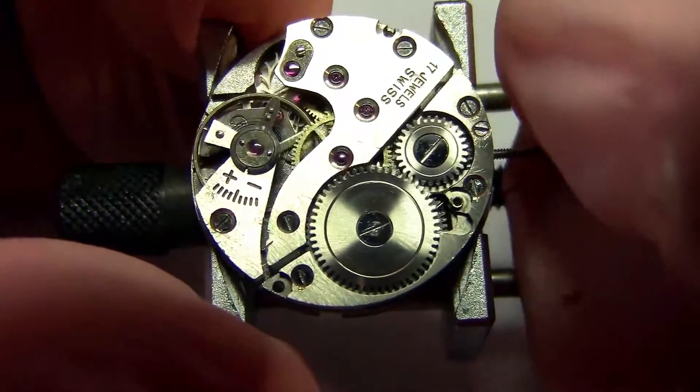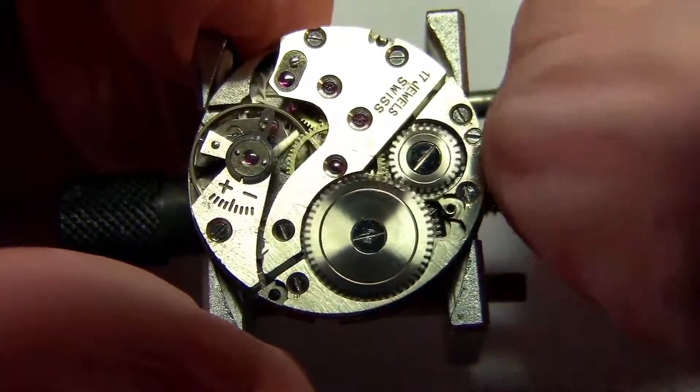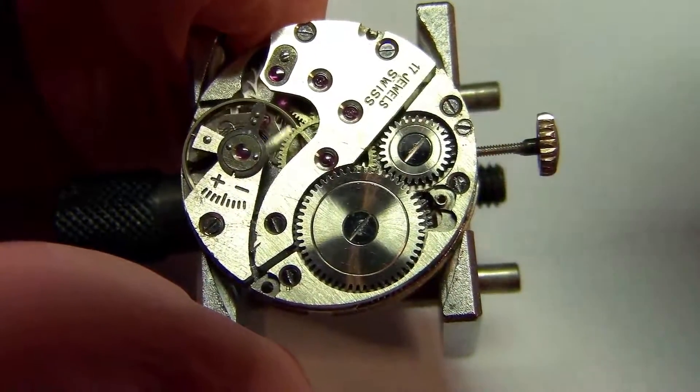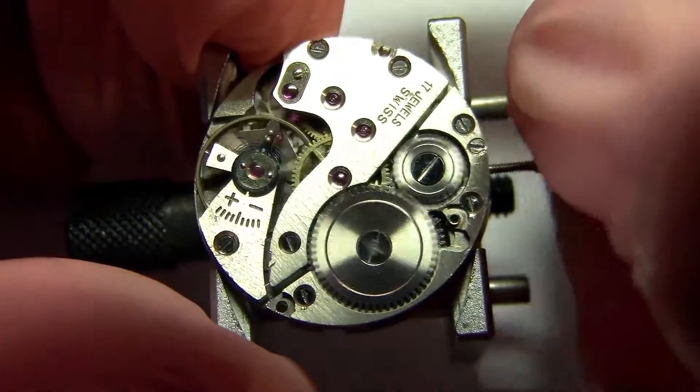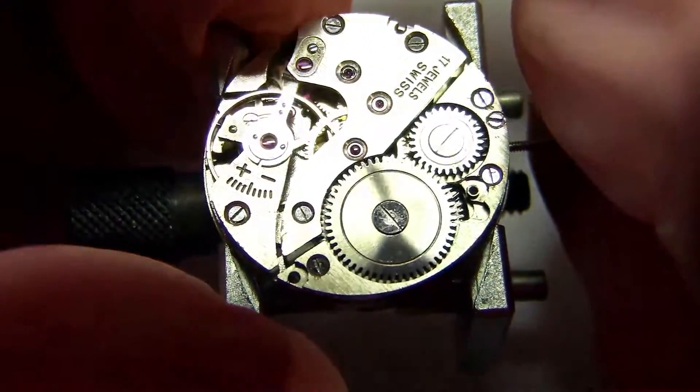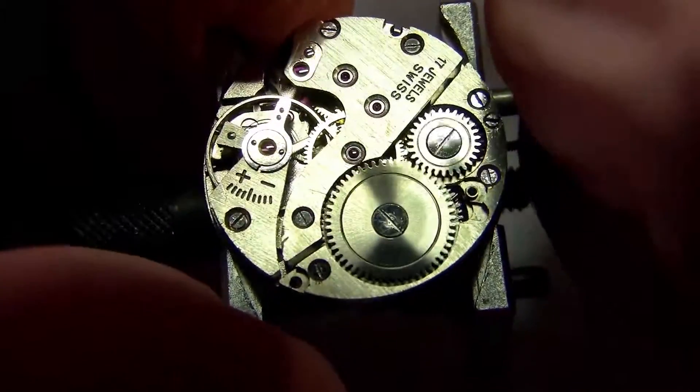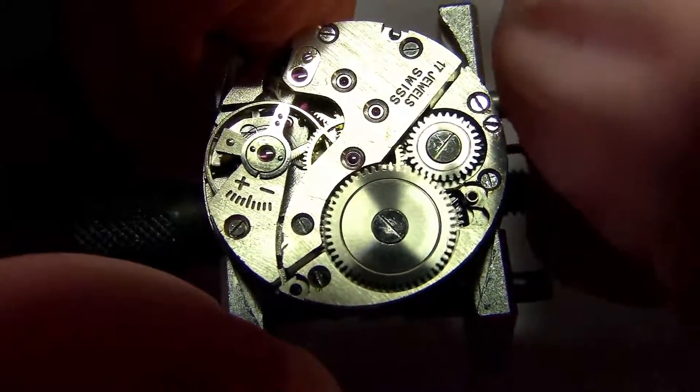Here you can see better what happens if I didn't have the click in place, if I didn't have that ratchet function. You see that I try to wind it up, but it just unwinds instantaneously.